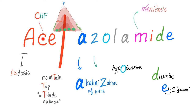You just write the word acetazolamide, and the T is the mountain. Acetazolamide — A-C — because it causes acidosis. What type of acidosis? The normal anion gap metabolic acidosis, also known as hyperchloremic metabolic acidosis.